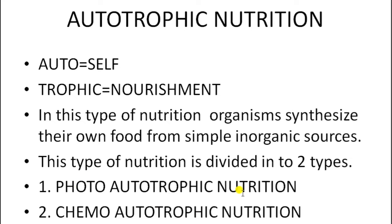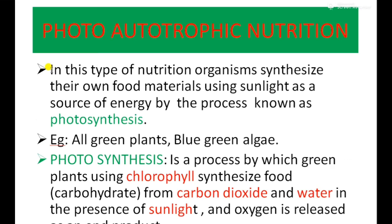In photoautotrophic nutrition, organisms synthesize their food materials using sunlight as the source of energy. The process by which they synthesize food is known as photosynthesis. Examples are all green plants and blue-green algae. Green plants contain a pigment called chlorophyll, and due to the presence of chlorophyll, plants are able to synthesize their own food. If chlorophyll is not present, plants cannot synthesize food.